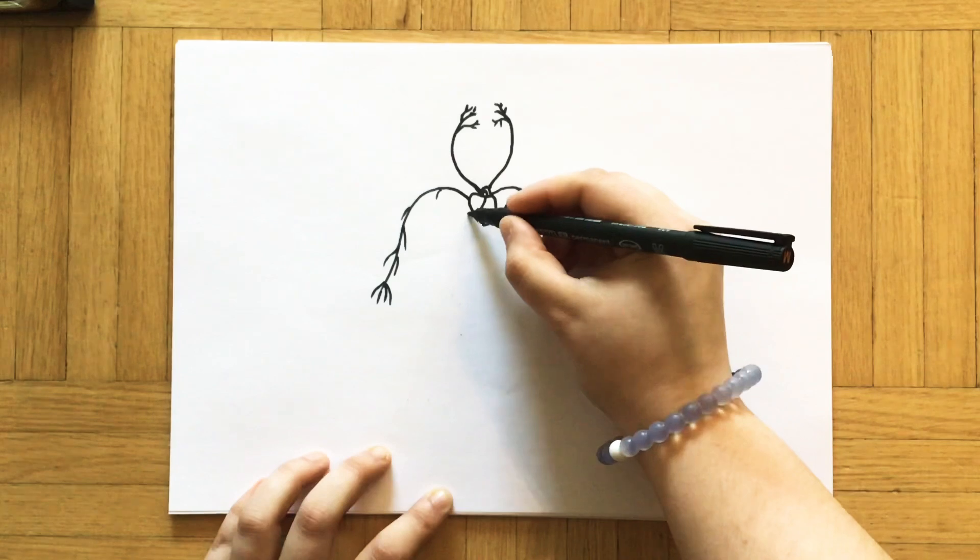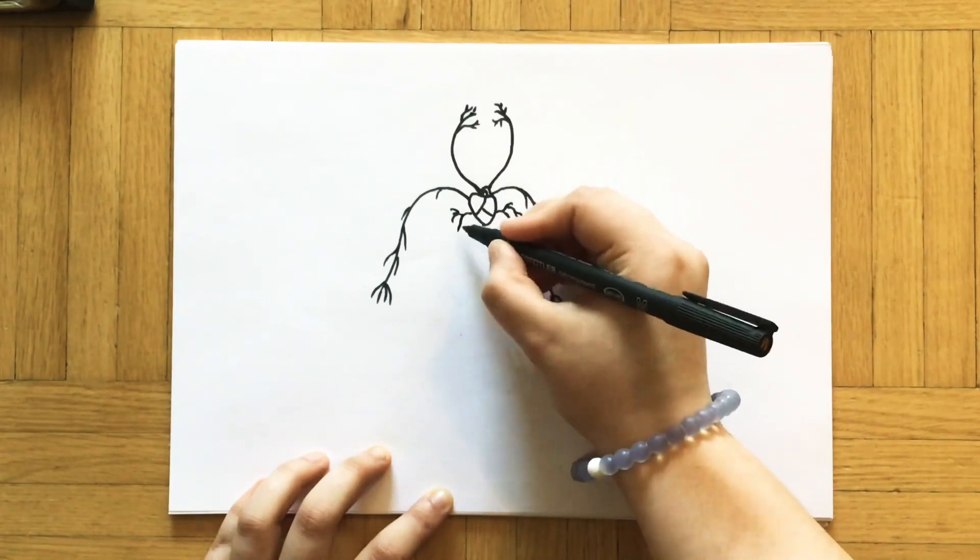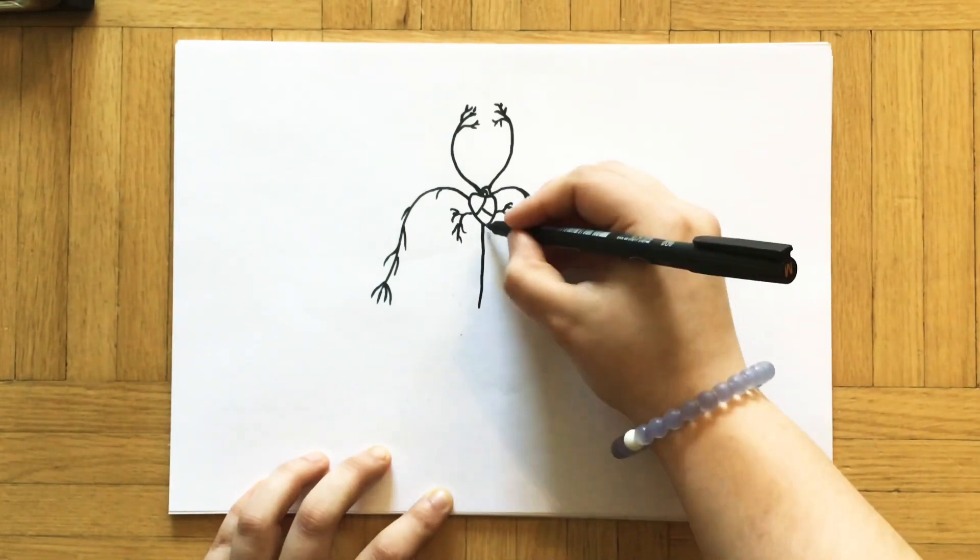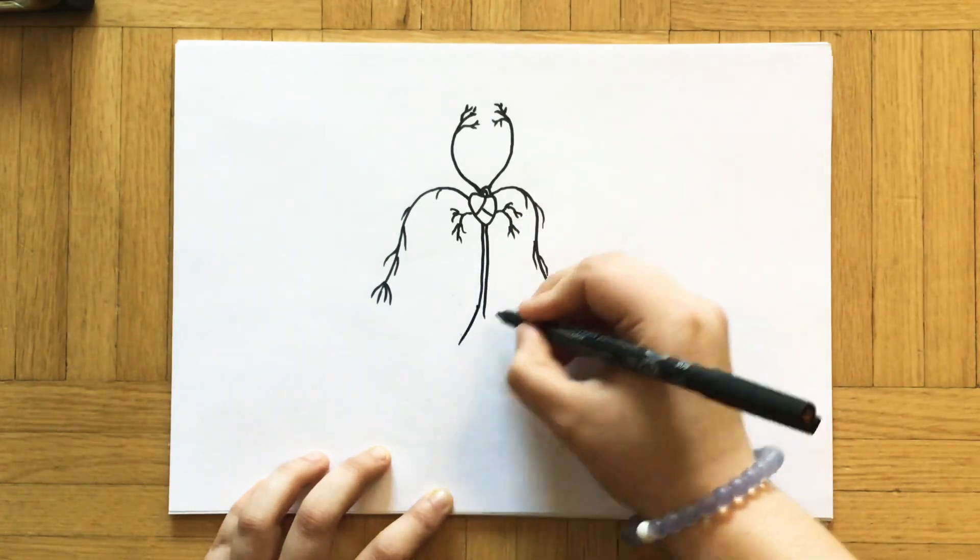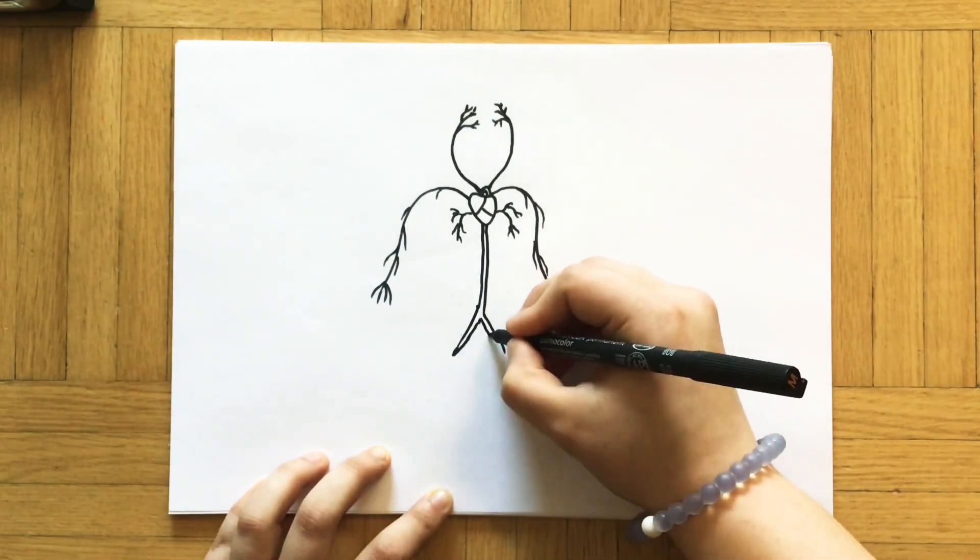Arteries have a really important role because they take oxygenated blood—that's blood with oxygen in it—from the lungs into the rest of the body.